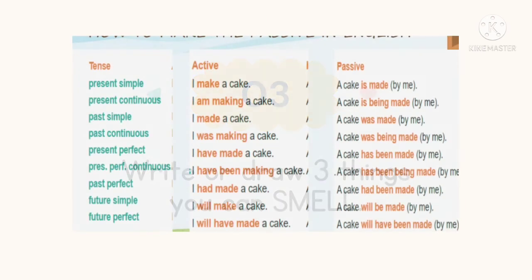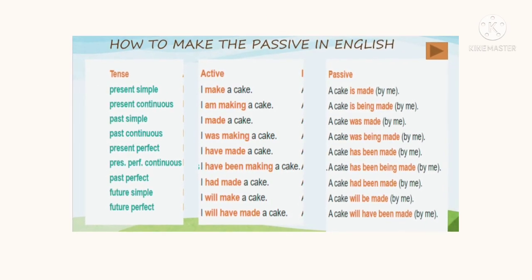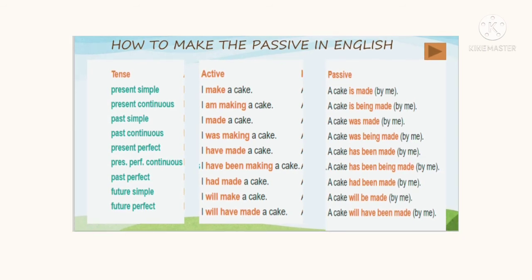Now it is time for you to understand, or at least get familiar with, the basic structure you must remember when constructing passive voice. When the active sentence is in present tense, you must ensure the passive verb is also in present tense. For example, in present simple: 'I make a cake' becomes 'A cake is made by me' — where 'by me' is optional.